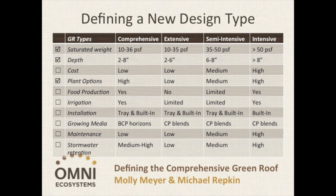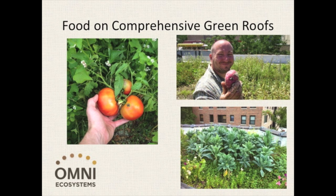For the chart lovers among us, this chart helps break down the differences by attribute. We've already discussed the defining differences in saturated weight and depth. Typically, extensive green roofs are the most cost-effective of the green roof types. Comprehensive green roofs use a similar quantity of material and amount of labor, so they have an installed price on par with extensive green roofs. We've also already talked about differences in plant options — specifically, food production is possible in comprehensive green roofs, like intensive green roofs.